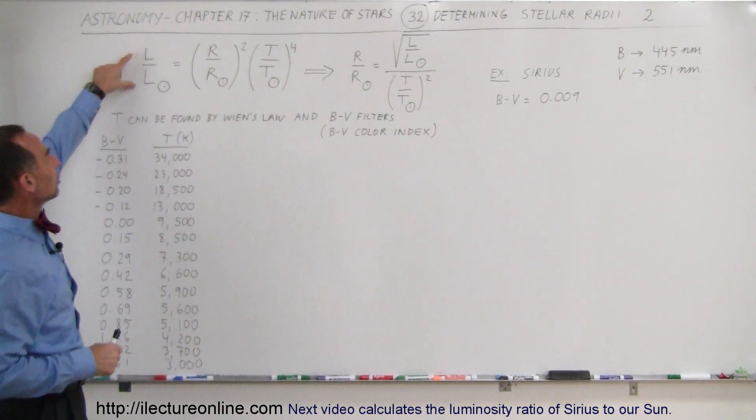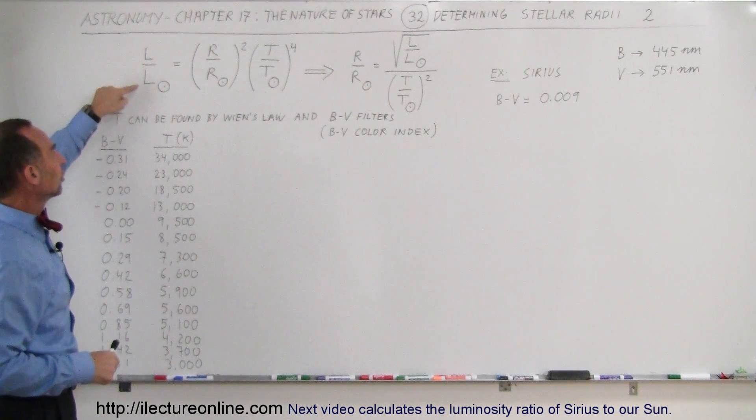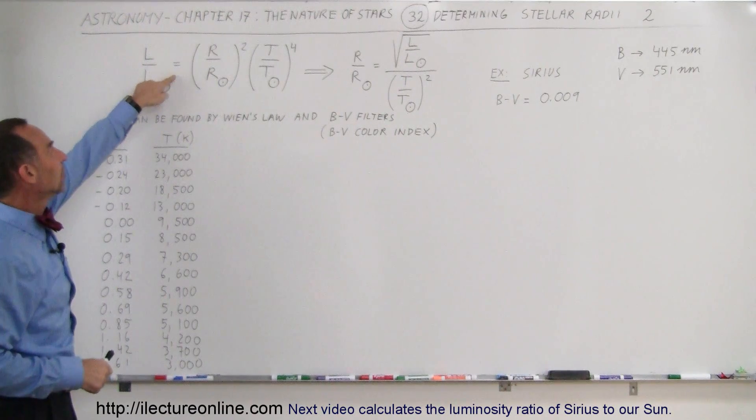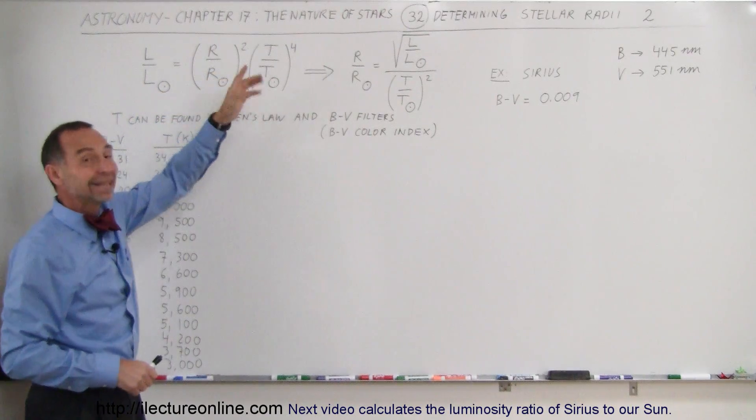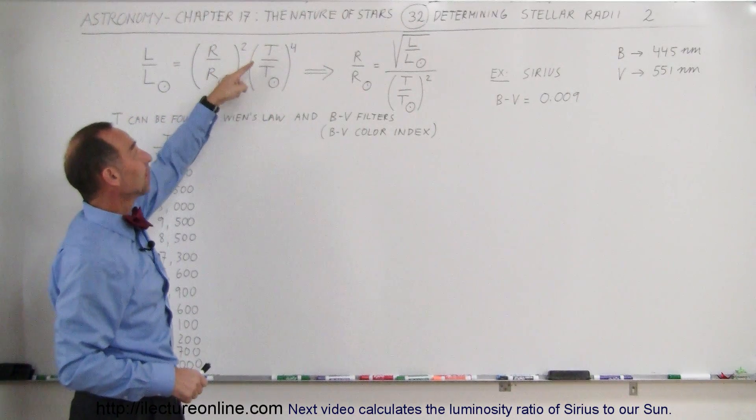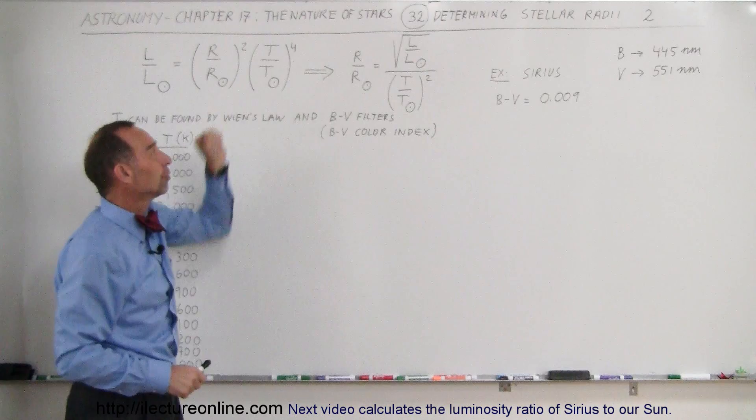Here we have the relationship between the luminosity of a star relative to the luminosity of the sun is equal to the radius of the star relative to the radius of the sun, quantity squared, times the temperature of the star divided by the temperature of the sun, quantity to the fourth power.